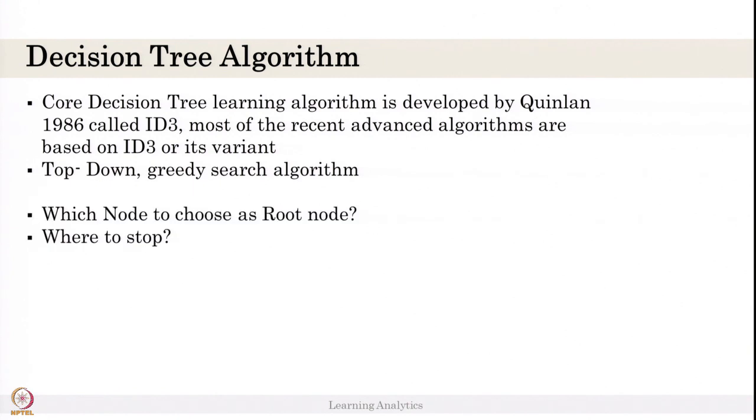The question here in decision tree is which node to choose as a root node. Suppose there are four features - in the previous example, the feature is having exam. How do you choose having exam as a root node? Which node to choose as a root node is very important. And where to stop, when to stop - what is the final leaf node, when to stop the tree, can it further continue more conditions and more logics, but when to stop it. These two are the key questions in the decision tree algorithm.